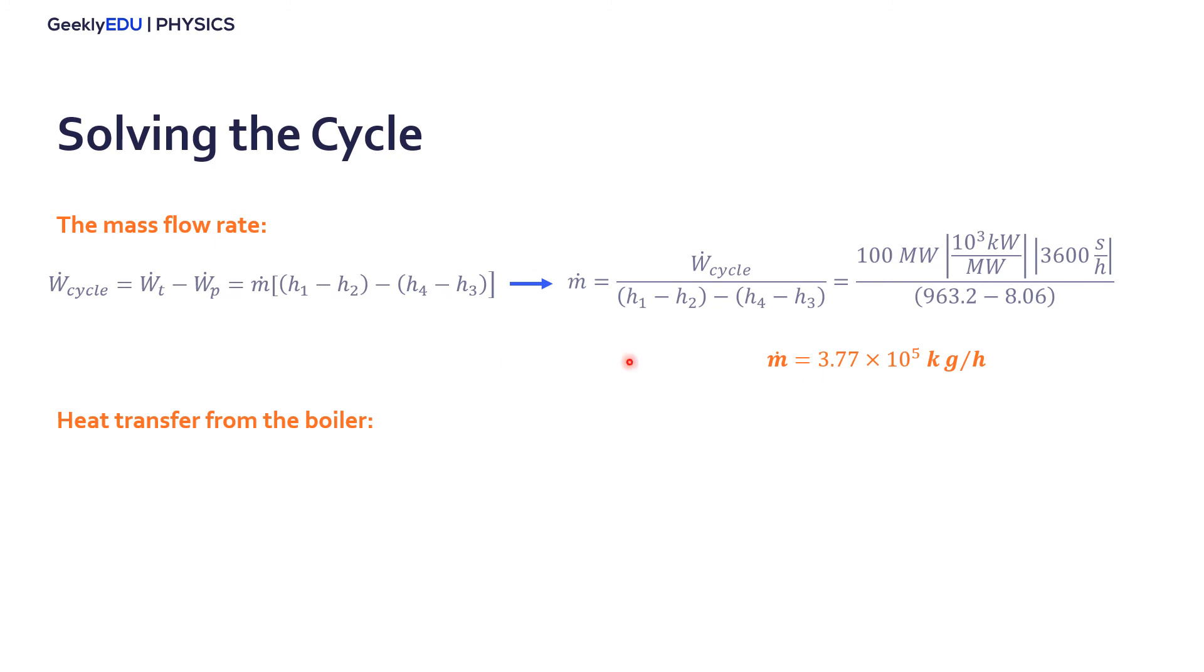The heat transfer from the boiler. The same thing. We have the heat transfer in the system. We have the enthalpies for the states. We have the mass flow now. We can find that the heat transfer in the system, in the cycle from the boiler, it's 269.77 megawatts. Here again, I'm adding this conversion because here is kilograms per hour, but for watts, we need seconds.